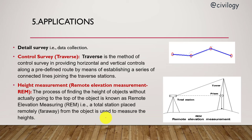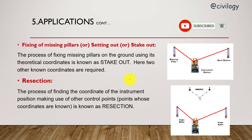Height measurements and remote elevation measurement: Using total station you can find the height of a tower without placing prism at the point. Fixing of missing pillars means you can find a missing pillar or point on the ground by knowing other two coordinates. This is known as stakeout.